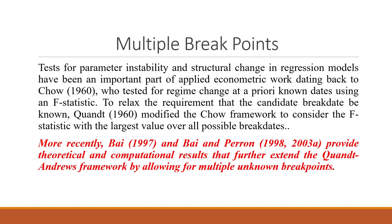To relax the requirement that the candidate break date be known, Quandt modified the Chow's framework to consider the F-statistic with the largest value over all possible break dates. More recently, Bai in 1997 and Bai and Perron in 1998 provided the theoretical and computational distribution results that further extend the Quandt-Andrews framework by allowing for multiple unknown break points.